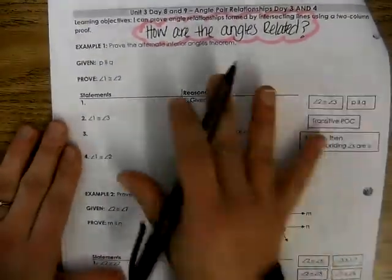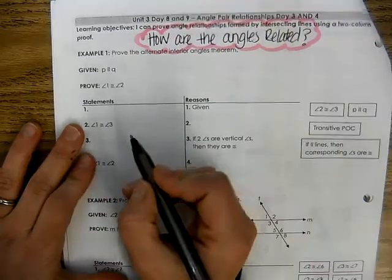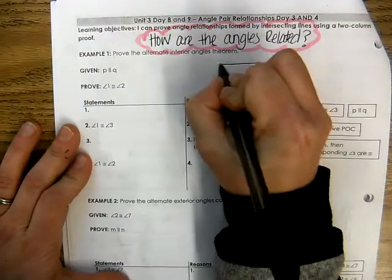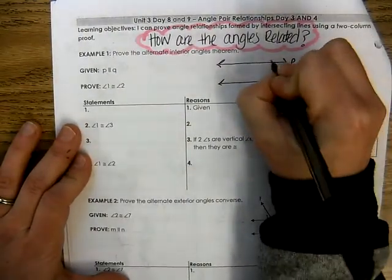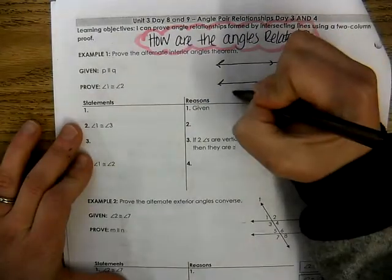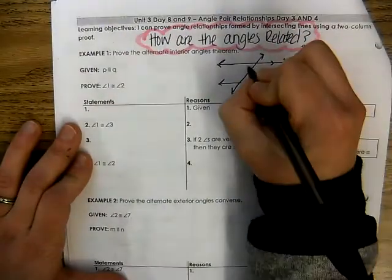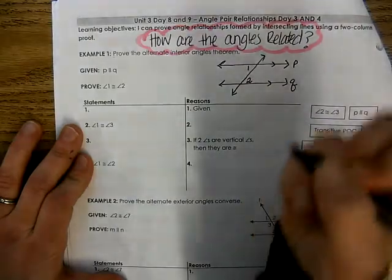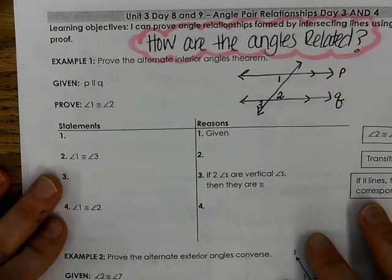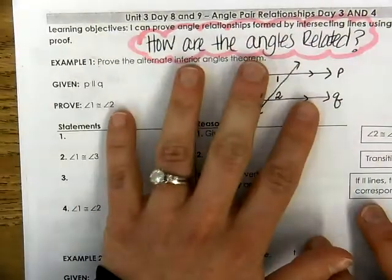So we're going to go ahead and draw a picture to represent example one. It says we are given that line P and line Q are parallel. So we're going to draw two parallel lines, call one P and one Q, and mark them with arrows to indicate that they are parallel. Then we cut them with a transversal line and label our angles: this angle is angle one, this angle is angle two, and this angle is angle three. So we are given that line P and line Q are parallel to each other — the picture did not show, so that's why I'm marking it up.